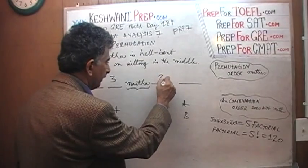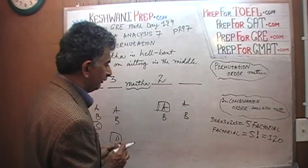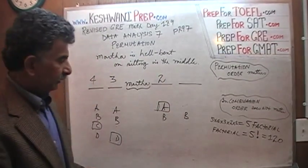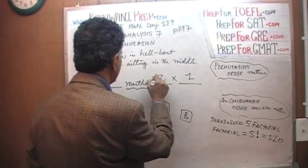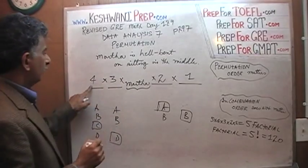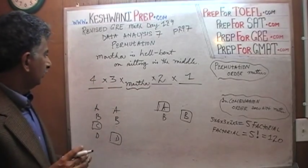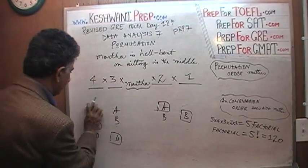How many choices do we have left now for this spot? Only two choices, either A or B. Let's pretend that we pick A, which means we cannot pick A. And for the last spot, whoever is left goes in the last spot. And therefore, the answer is four times three times two. That's all. Four times three times two is 24.